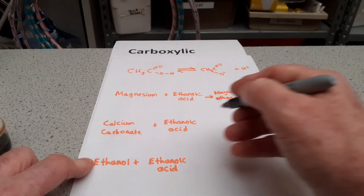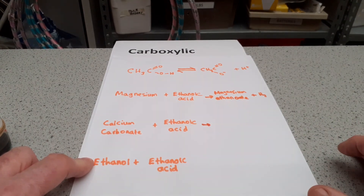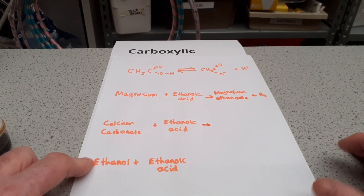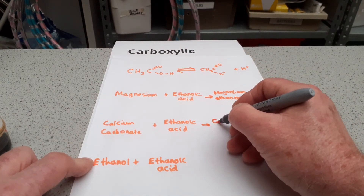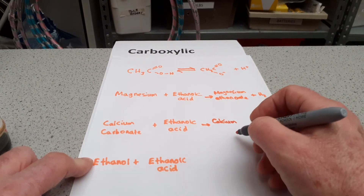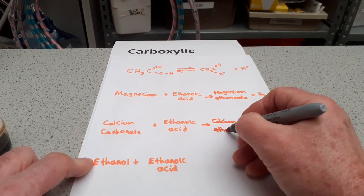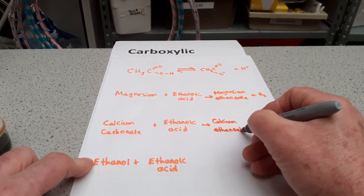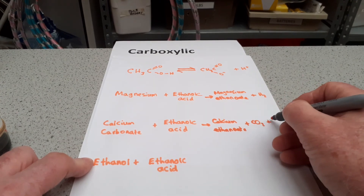Similarly, with our reaction with calcium carbonate: acid plus carbonate gives you a salt plus carbon dioxide plus water. Our salt this time, because we're using calcium carbonate, starts with calcium — that being the metal. Because we're using ethanoic acid, it will be ethanoate again, giving us calcium ethanoate plus carbon dioxide plus water.